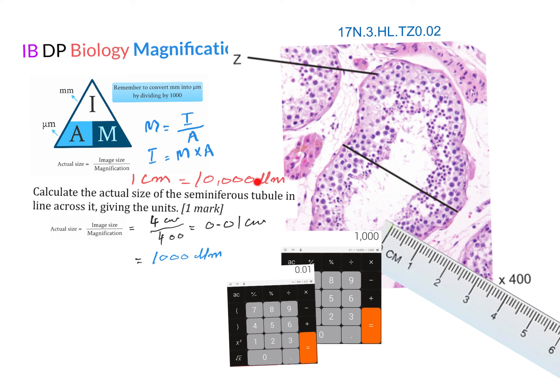We already know that one centimeter is equal to 10,000 micrometers. So 0.01 multiplied by 10,000, which is 1,000. So the actual size is 1,000 micrometers or 0.01 centimeters.